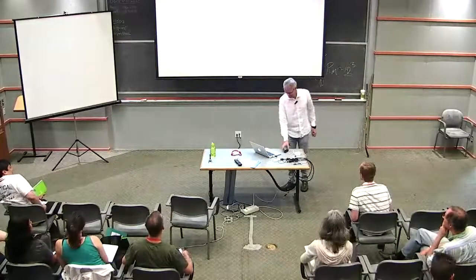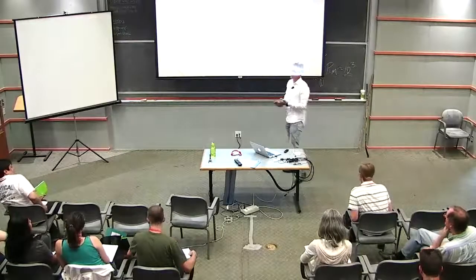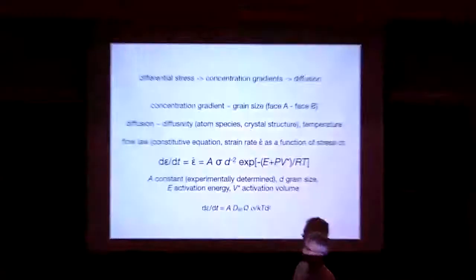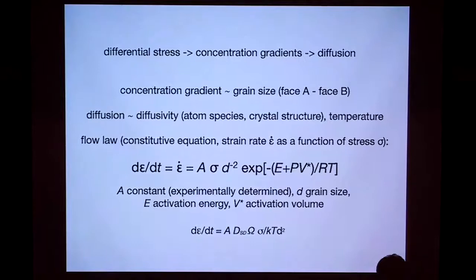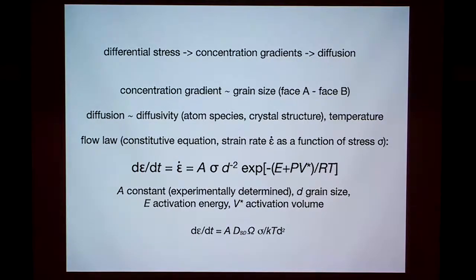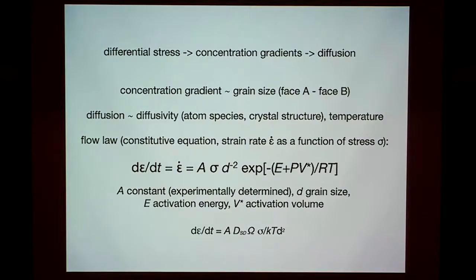Good morning. We'll continue from where we left off on Tuesday. The program for today: I'll finish up with the flow laws. We ended with diffusion creep, we'll briefly look at dislocation creep, then put up a deformation mechanism map and explain what's in it. Then we'll look at the effect of melt on rheology, and move on to the transient part — steady state deformation background, which will be useful when I talk about transient creep and seismic properties.